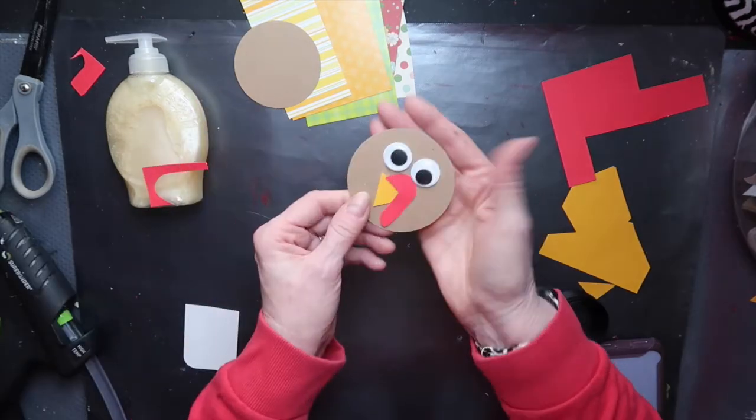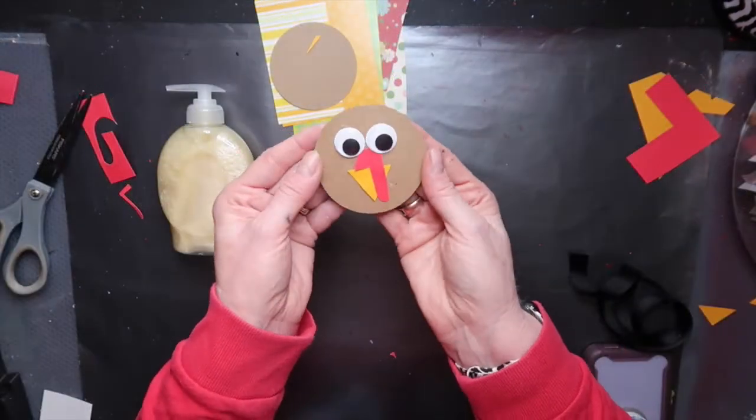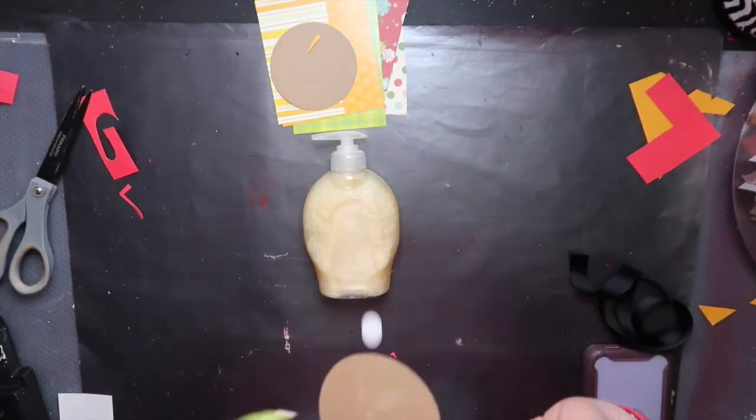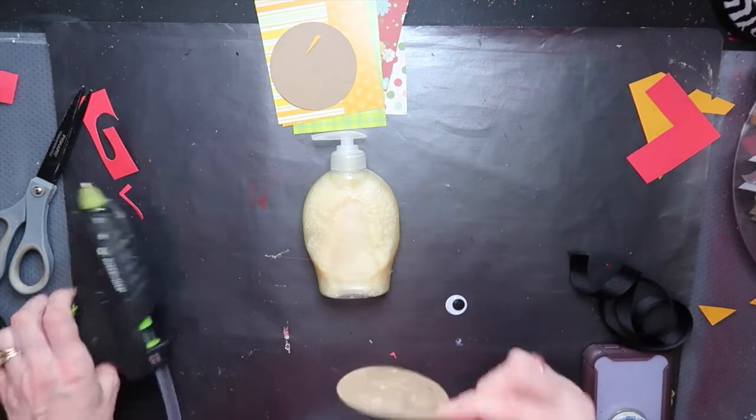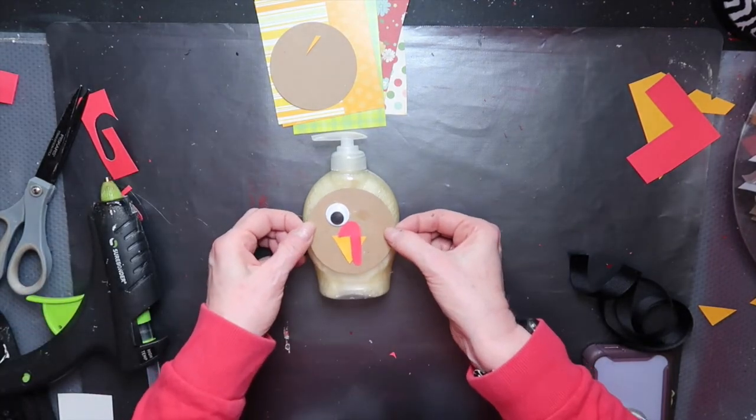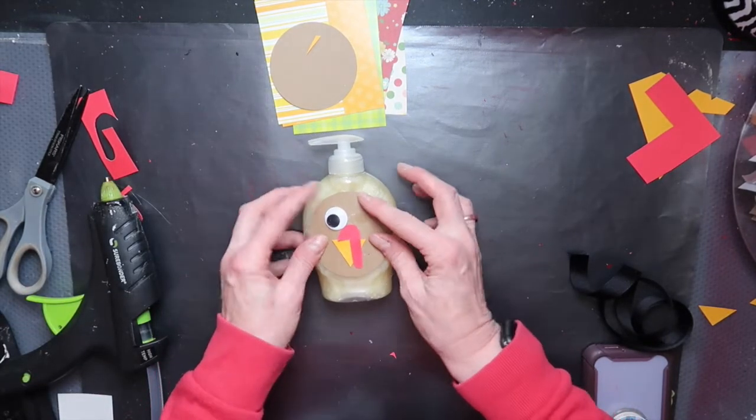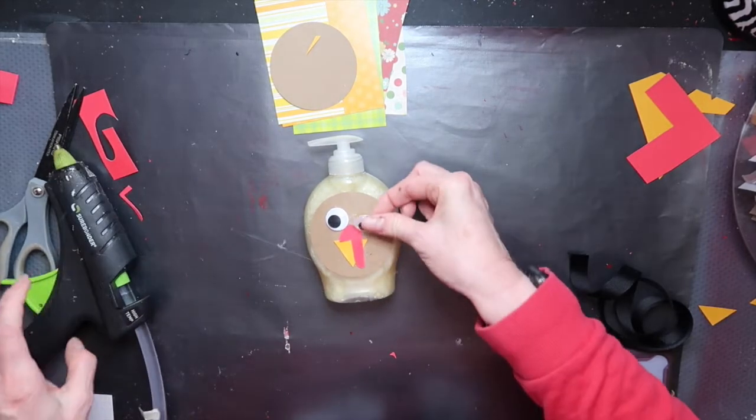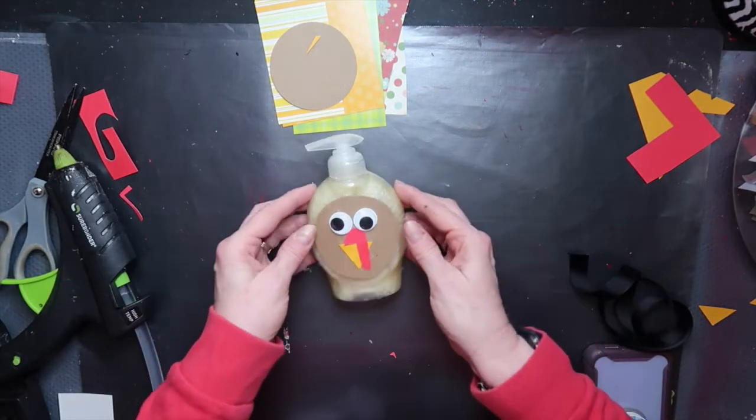All right, so now I have my little face done, and then I'm going to glue it onto the front of the soap bottle. For some reason, my little wiggle eyes don't want to glue on the paper, but I'm just going to find that center spot and glue my face on there.